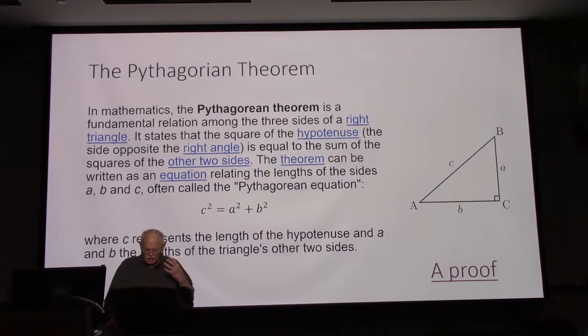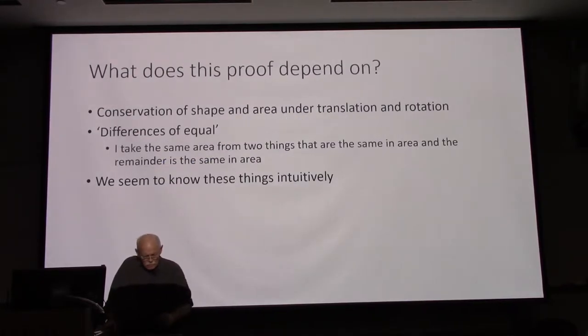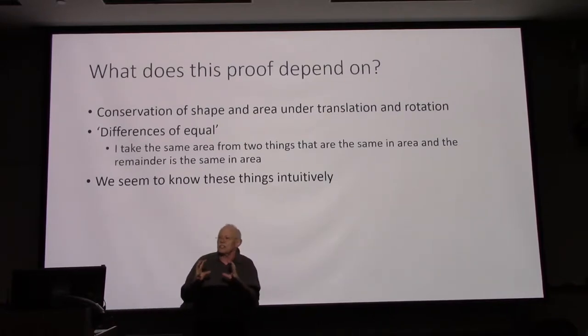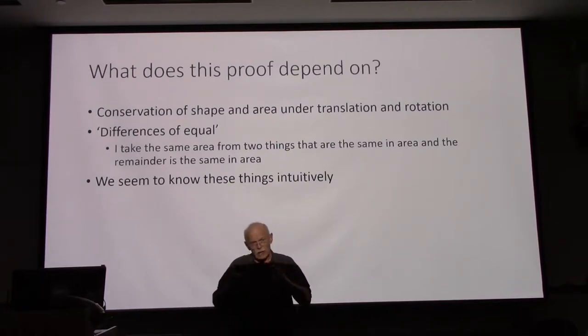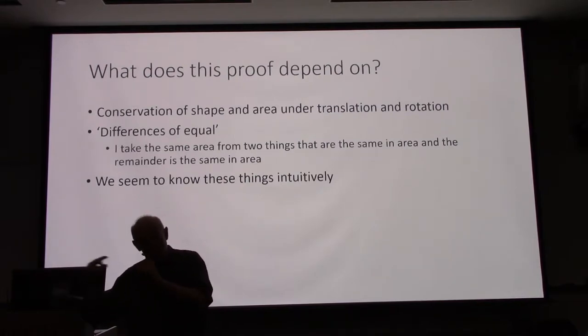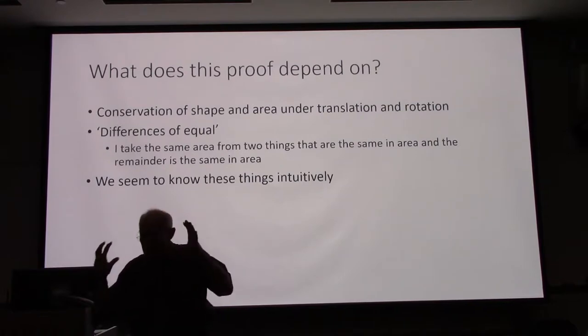And what was causing that? So a couple of things seem to be fundamental to this. One is this notion of the conservation or the preservation of a property, of shape and area under translation and rotation, right? All those little triangles, they get copied, you make copies of them, they're the same, you clone them, and then you rotate them and they're still the same. It's still the same shape. It still takes up the same amount of space.